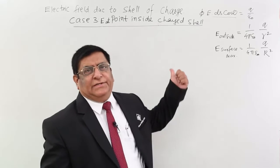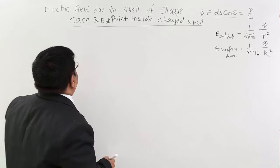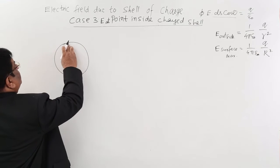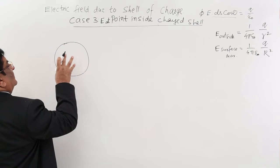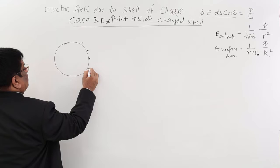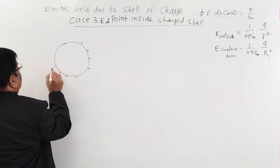Now we will study the third case, which is a very important case. If there is a shell or a conducting sphere, we give charge to it. The charge is distributed only on the surface and inside there is no charge.